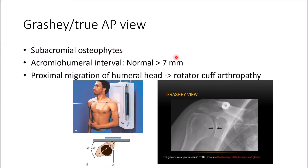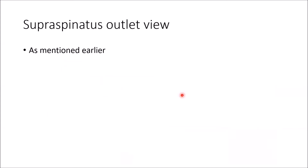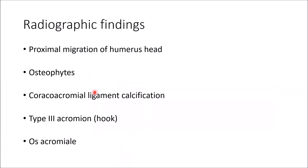The true AP view is used to identify any subacromial osteophytes and to measure the acromial-humeral interval, which should be more than 7 mm. You can also check for proximal migration of the humeral head, which may indicate rotator cuff arthropathy. The axillary view — with the arm abducted and beam directed through the axilla — is used to identify os acromialis. The supraspinatus outlet view has been described previously. Radiograph findings to look for include proximal migration of the humeral head, osteophytes, coracoacromial ligament calcification, hook acromion morphology, and presence of os acromialis.